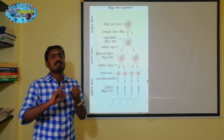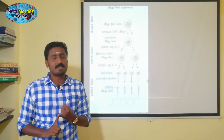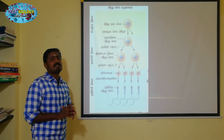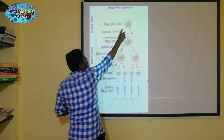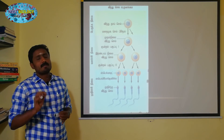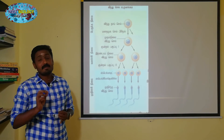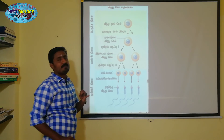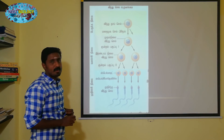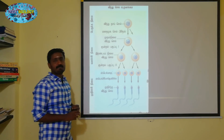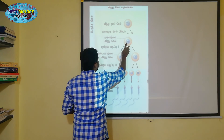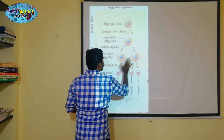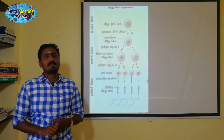To summarize how spermatogenesis proceeds in the seminiferous tubules: in the epithelial layer, there are primordial germ cells. The spermatogonia — also called sperm mother cells — are produced first. Then through mitosis, primary spermatocytes form. Then through meiosis I, secondary spermatocytes are produced.